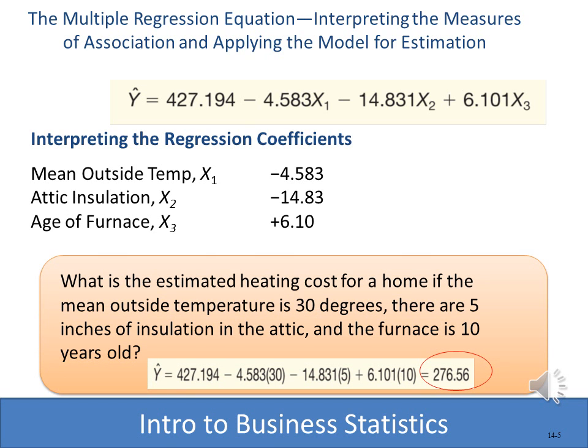Taking that information from the Excel result, we're able to build a multiple regression equation. We end up with an intercept of 427, a negative slope for x variable 1, a negative slope for x variable 2, and a positive slope for x variable 3. Once we know the values for x1, x2, and x3, we're then able to predict a monthly charge to heat the house.